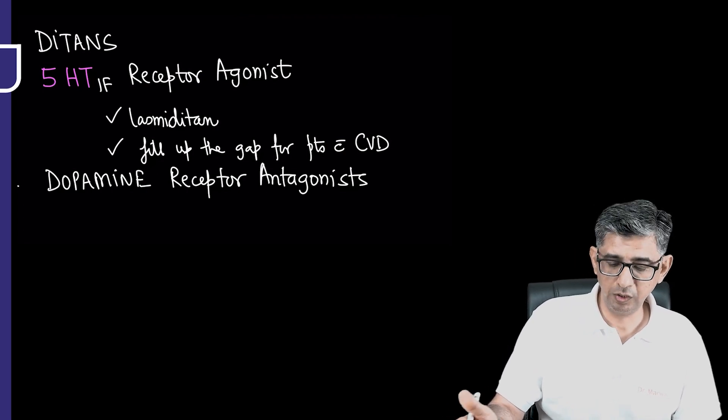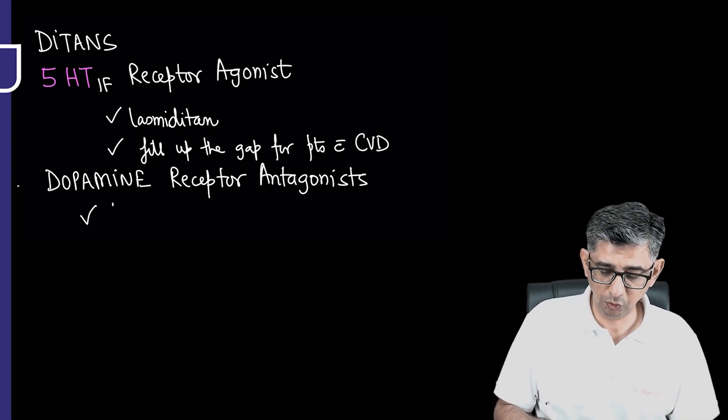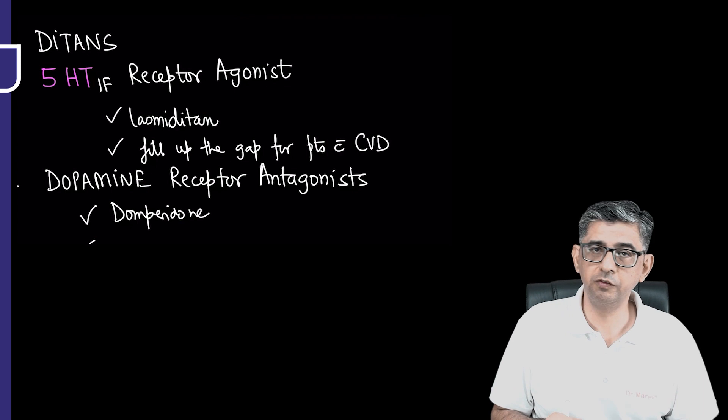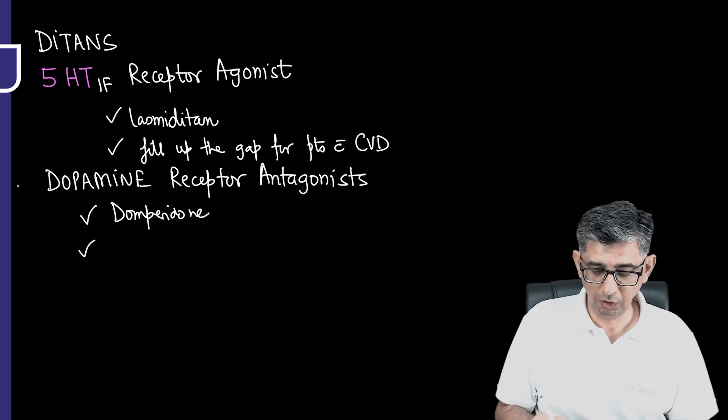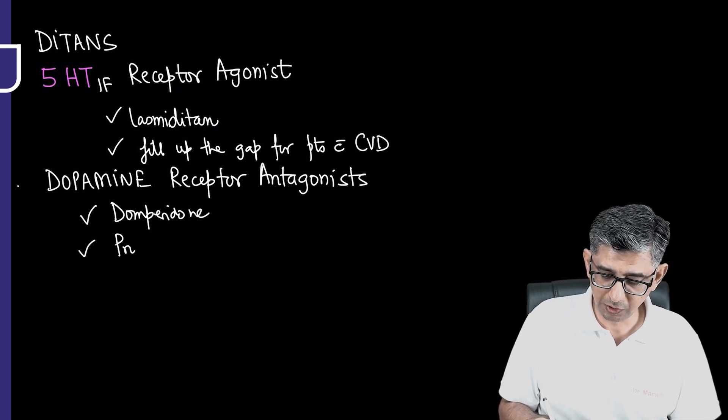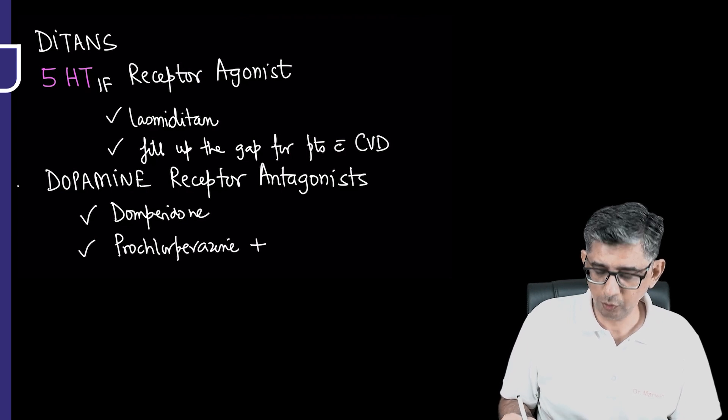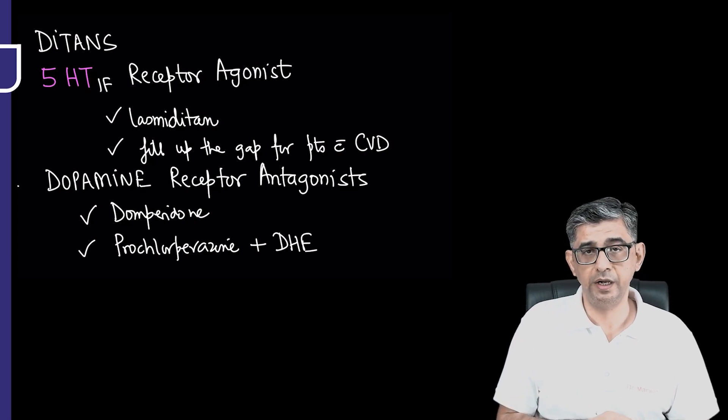Because a lot of patients would be having substantial amount of nausea and vomiting, we will have to give domperidone or metoclopramide to these patients. Apart from this, there might be patients who might be coming to us with very severe attack, they're not able to take anything orally, and the injections of sumatriptan are not available. Then in those circumstances, a low-cost option that we can be using is a combination of prochlorperazine given in an injectable format, and along with this dihydroergotamine can be given slowly over two minutes.